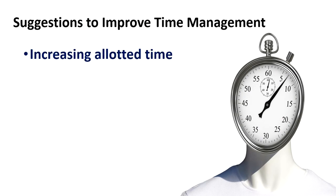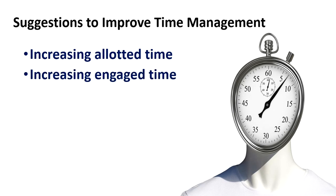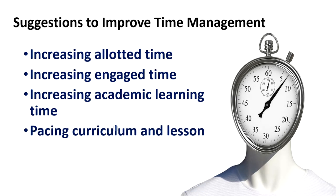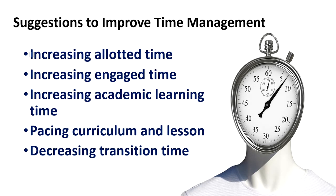Here are certain suggestions on how you can improve your time management. Increase allotted time for better teaching and learning — if you increase it, all other times will increase automatically. Increase the engaged time: if six hours are allotted to you in a day, use more of that as engaged time. Within engaged time, increase academic learning time because it matters most. Manage the pace of your curriculum and lessons, and decrease the transition time. Decreasing transition time will increase academic learning time and engaged time, and positively affect teaching and learning outcomes.